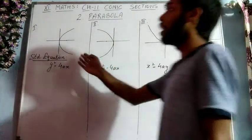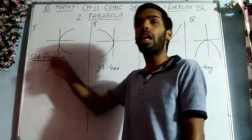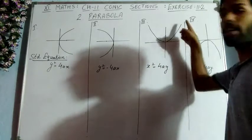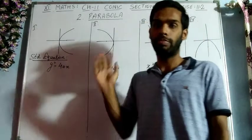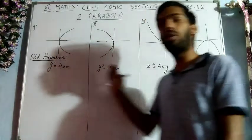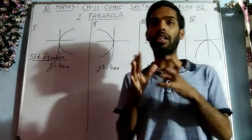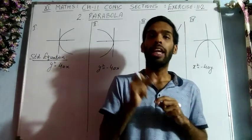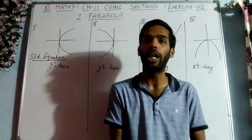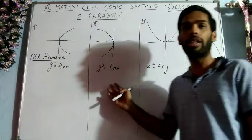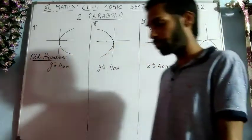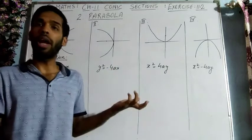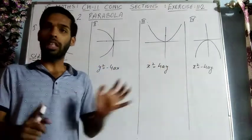Now students, how to identify which equation belongs to which category: in all four equations, either x or y has power 2 and the other has power 1. For the first two equations, x has power 1 and y has power 2. For the last two, y has power 1 and x has power 2. So if a question gives an equation where one variable has power 2 and the other has power 1 — that is a parabola equation. The variable with power 1 (linear term) tells you which axis it is symmetrical about.